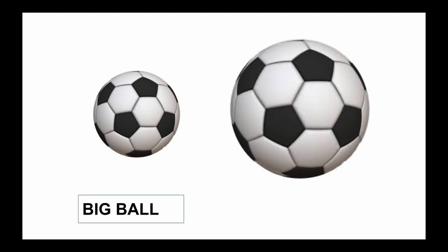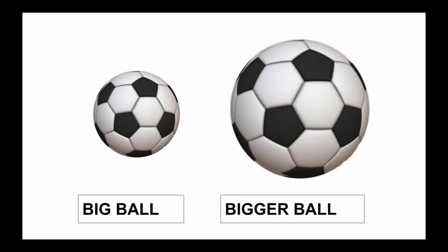This is a football — this is a big football. Now compare the size: this football is bigger. So we will use the term bigger. When we have two big objects and we have to compare their sizes, for the object which is more big we will use the term bigger, and for the other one we will use big.